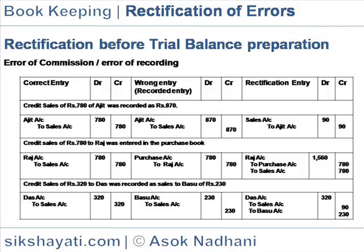Credit sales of Rs.780 to Raj was entered in the purchase book. The rectification entry would be as follows.